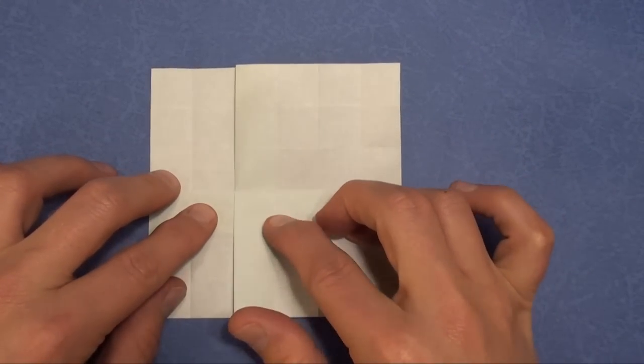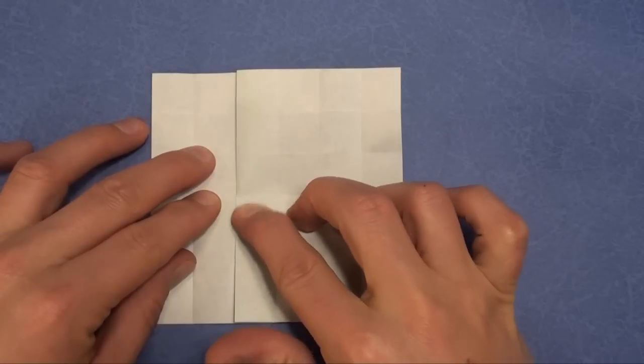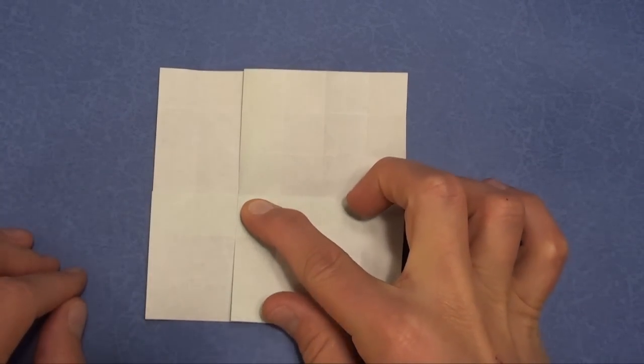One square is extra thick. It has nine layers. Find that square. It's right here.